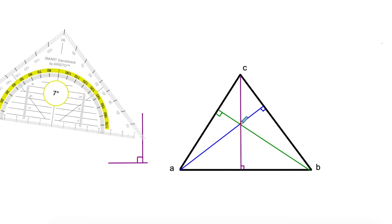And here we have the three altitudes. And the point where all three meet is going to be the orthocenter of the triangle. That is this point over here.